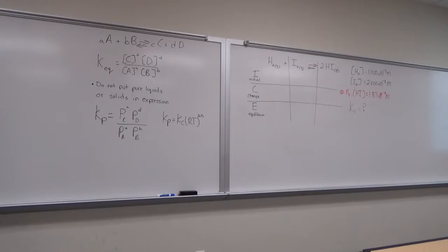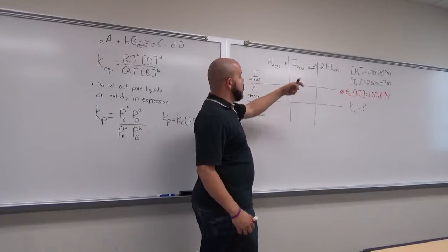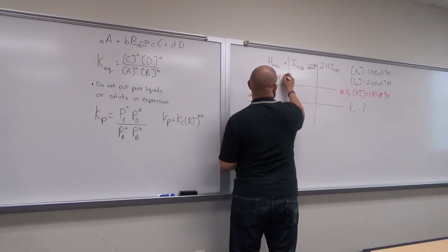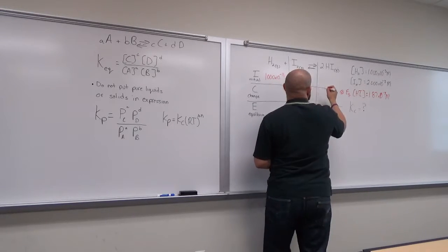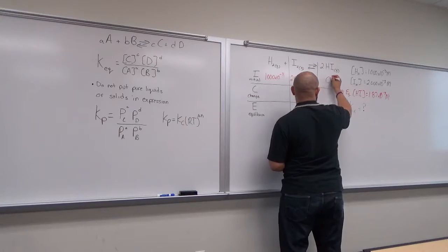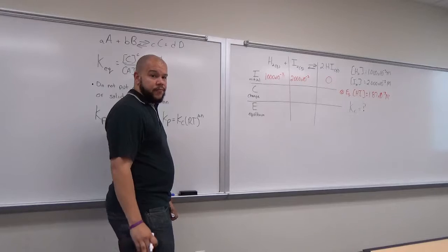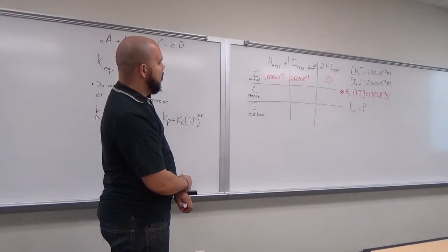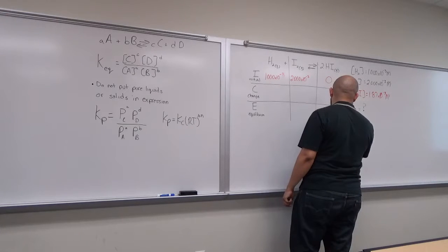Information that we do know: initial concentrations of all species. Initial concentration of H₂ is 1.000 × 10⁻³ M, I₂ is 2.000 × 10⁻³ M, and HI is zero — remember that. A lot of people get confused there. You don't have any product yet. We were also told the equilibrium concentration for HI is 1.87 × 10⁻³ M.